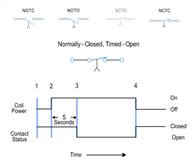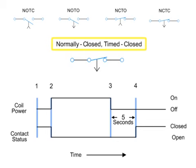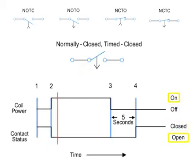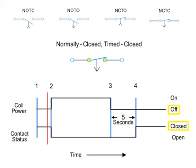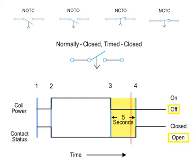The last time delay relay we will look at employs a normally closed, timed closed contact. Similar to the normally closed, timed open contact, this type of contact is normally closed when the coil is de-energized and opened by the application of power to the relay coil. However, unlike the NCTO contact, the timing action occurs when the coil is de-energized instead of when it is energized. Thus, the contacts open immediately when the coil is energized and close five seconds after the coil is de-energized.